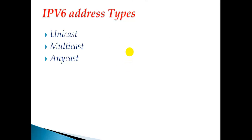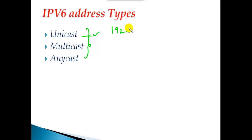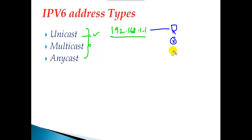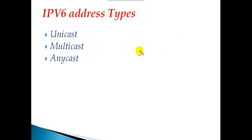In IPv6 we don't have any classes like that. We have three categories of addresses. We have unicast address, which is a normal IPv6 address that can be assigned to any device in the network — a computer, a router, or any device like a firewall. Any address which you can assign to any networking device we call a unicast address — one to one.